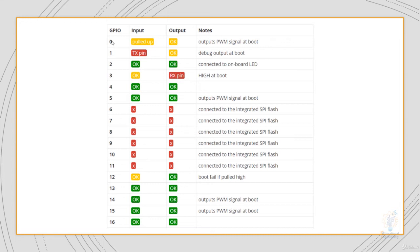GPIO pin 0 is okay to use, but you need to pay extra attention because it may have unexpected behavior at boot time. It can be used as pull-up input or as output, and it outputs a PWM signal at boot. Pin 1 can be used as TX pin for serial communication or as output — it has debug output at boot. Pin 2 is okay to be used as input or output, and it is usually connected to the onboard LED, so you can use it to test code without connecting extra components, because it already has a built-in LED.